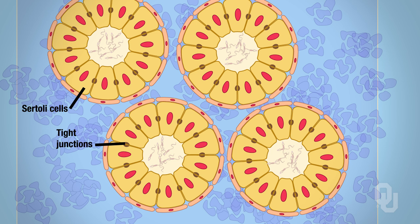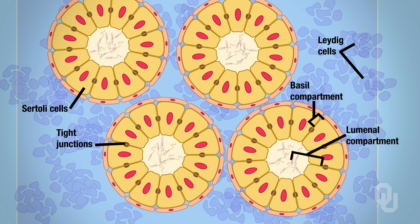Outside of the Sertoli cells are the Leydig cells. These are all the cells that are really important. In addition to these structures, you will need to be familiar with the following compartments: the basal compartment and the luminal compartment. These compartments are basically talking about regions of the cross section. If we are talking about the basal compartment, we are talking about the area that goes from the tight junction toward that smooth muscle. And if we are talking about the luminal compartment, we are talking about the area that goes from the tight junction toward the lumen.